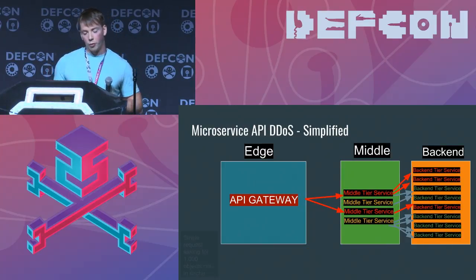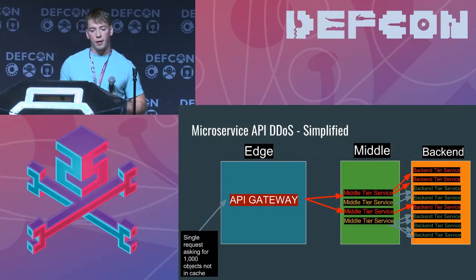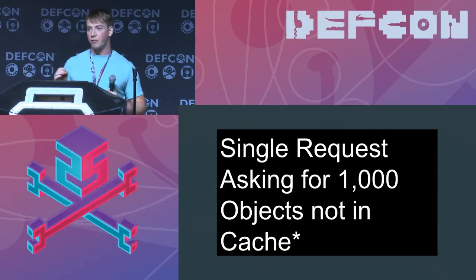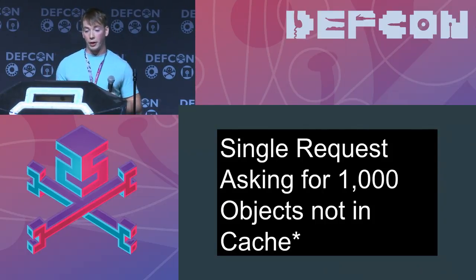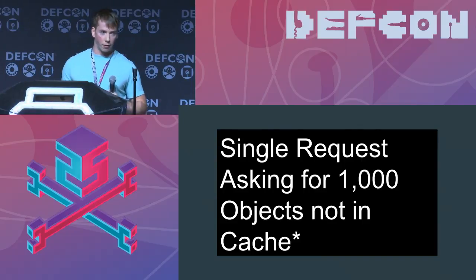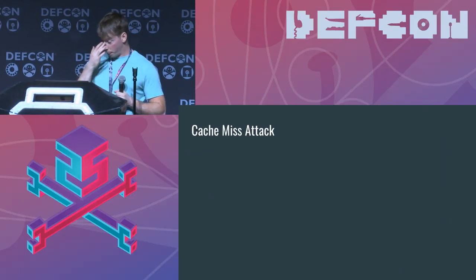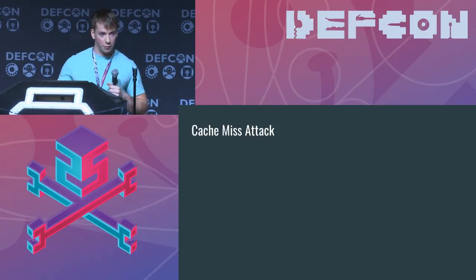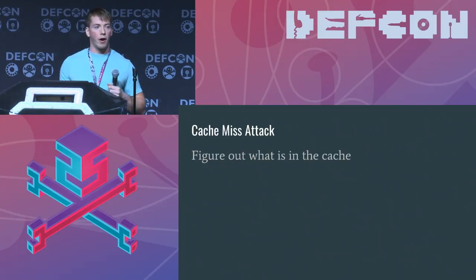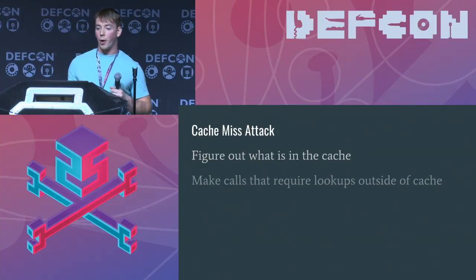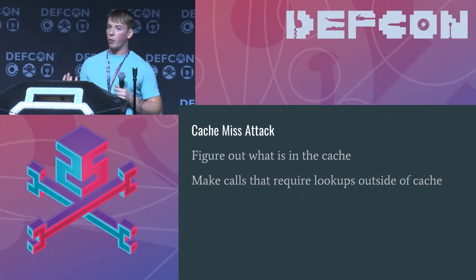Let's dig in a little more. Another example: a single request asking for a thousand objects not in cache. Objects not being in cache is extremely important because cache is fast. If we're trying to exploit an application DDoS vulnerability and we're only targeting things that are in cache, we're not going to be successful. We have to perform a cache miss attack. The idea is to figure out what's in the cache and then make calls that require lookups outside the cache — often if you specify really large request ranges and object sizes, you can actually perform this.